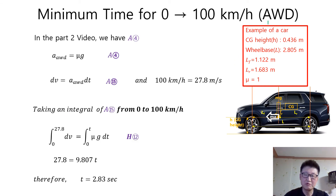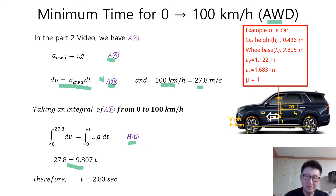Minimum time in the case of all-wheel drive can be easily calculated. In the Part 2 video, we have equation a4 and the differential expression equation a15. Employing the unit conversion — 100 km per hour equals 27.8 m per second — and taking the integral of equation a15 from 0 to 100 km per hour, we have equation h12. We end up with the simple equation, and the minimum time for 0 to 100 km per hour in the case of all-wheel drive is 2.86 seconds.